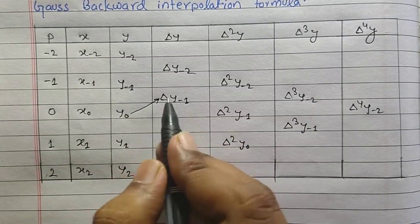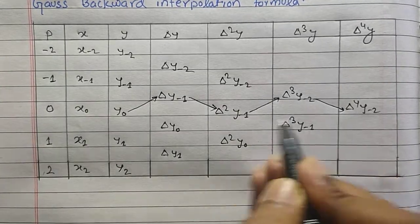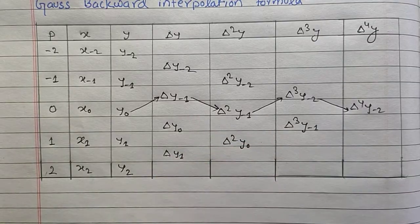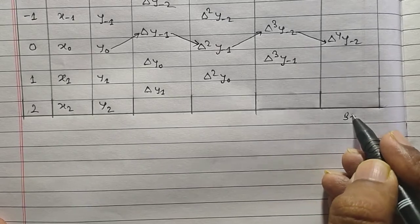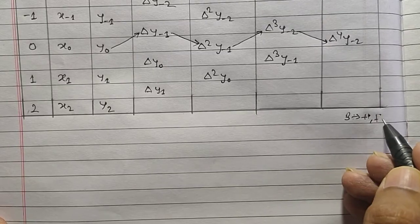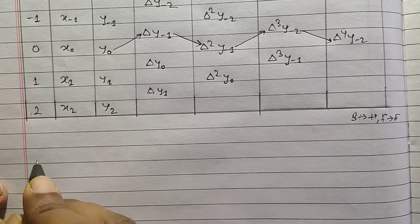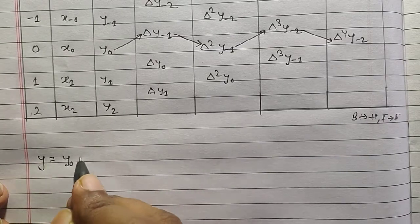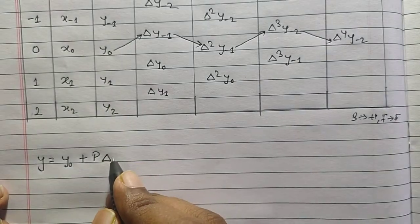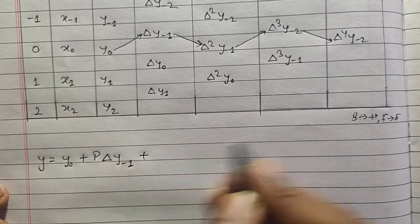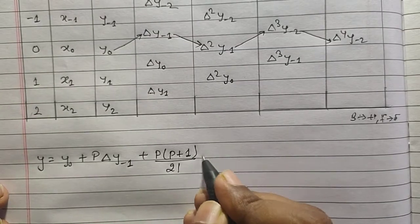After moving backward, we will again move down, again up, again down. Our formula will be derived as per this term. One thing more: in Newton's backward difference formula, in backward we do plus and in forward we do minus — forward minus, backward plus. So the formula is going to be: y = y₀ + p·Δy₋₁ + (p+1)/2! · Δ²...